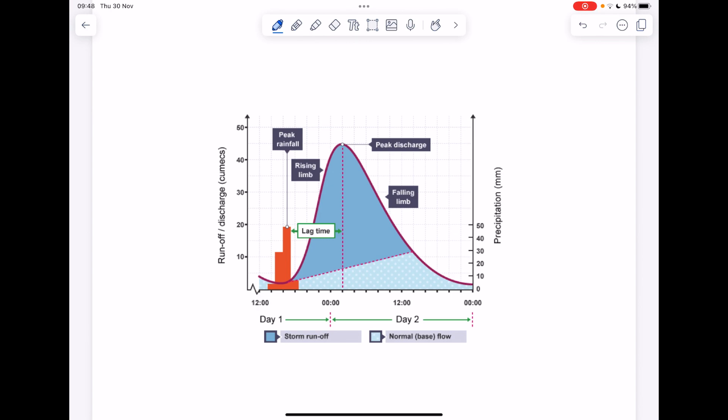Now we're going to look at the features of different storm hydrographs. So we'll start by looking at this portion where the bar chart is. We can see that this is the peak rainfall or peak precipitation. As you might imagine, this is the maximum rainfall that occurs.